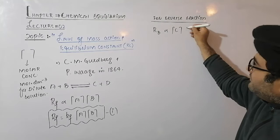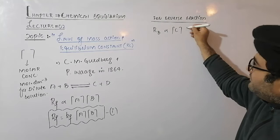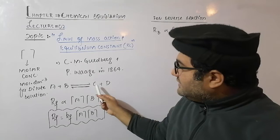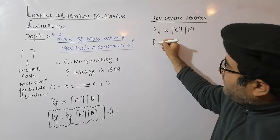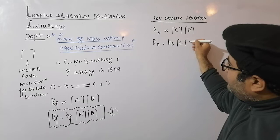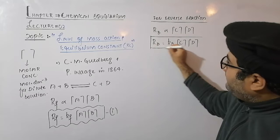The rate of the reverse or backward reaction is directly proportional to molar concentration of C times molar concentration of D, because in the reverse direction C and D are the reactants and A and B are the products. So the rate of backward reaction equals Kb times [C] times [D]. This is equation number two.